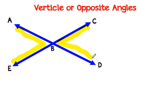So here we've highlighted two opposite or vertical angles. So angle ABE is opposite angle CBD.